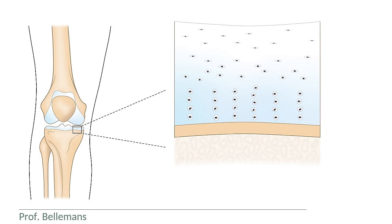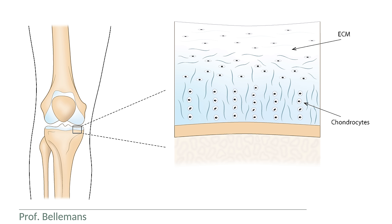These chondrocytes produce the extracellular cartilage matrix, as well as collagen fibers that keep the matrix together. And this leads to the very specific characteristics of the cartilage layer, which provides both shock absorption as well as smooth gliding of the joint.